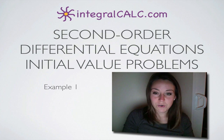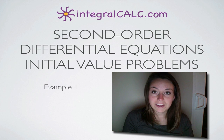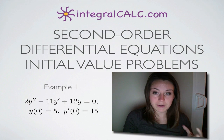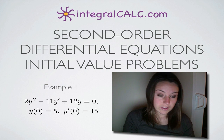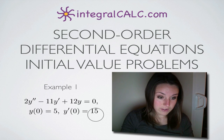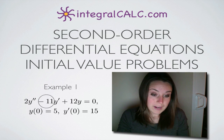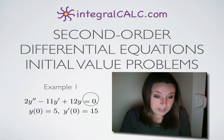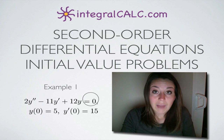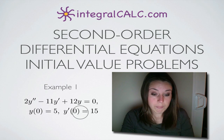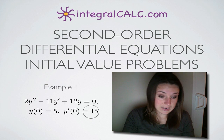Today we're going to be doing a second order differential equations problem where we're going to be given initial values. The equation we're given is 2y'' minus 11y' plus 12y equals zero, and we've been given the initial conditions y(0) equals 5 and y'(0) equals 15.